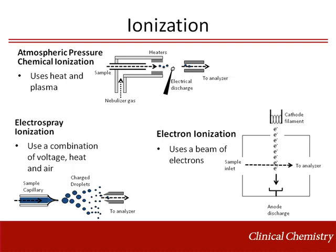ESI sources use a combination of voltage, heat, and air to produce excessively smaller droplets from the liquid sample. As the drops become smaller, ion concentration increases until ions at the surface are ejected into the gas phase. For larger ions such as proteins, the ions are liberated only after complete evaporation of the solvent.